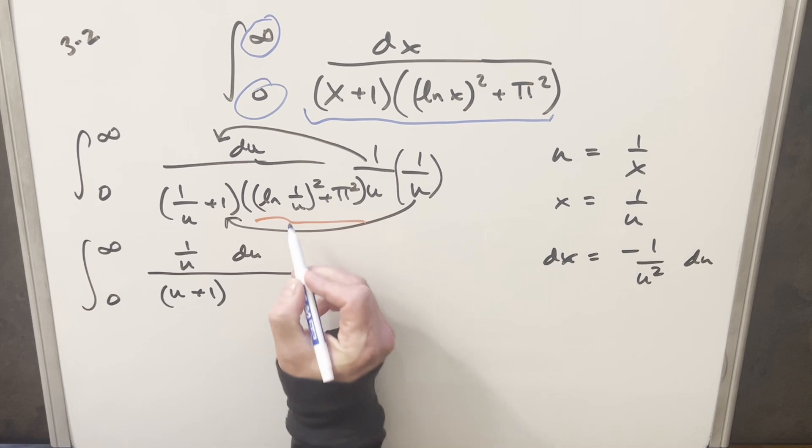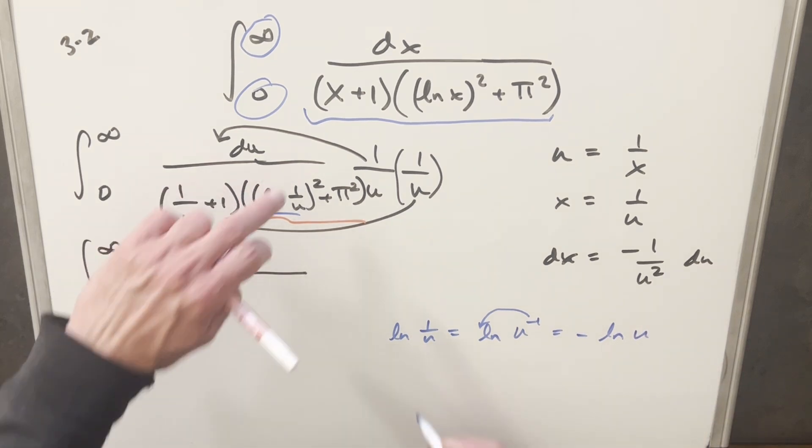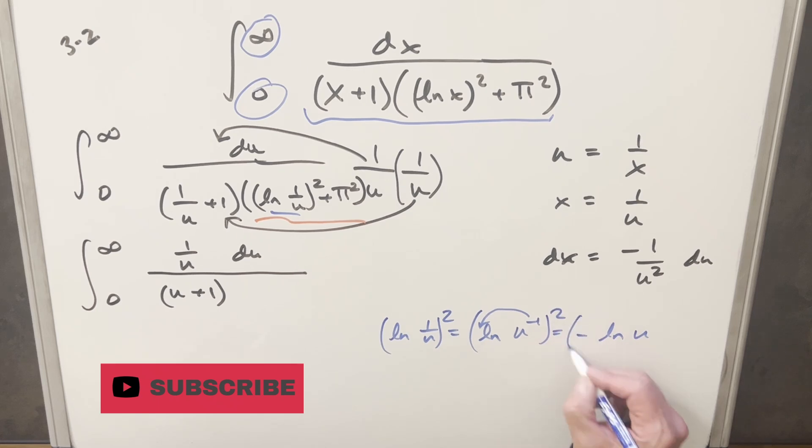For natural log 1 over u, I can write this as natural log of u to the minus 1. And then by exponent properties, bring the minus 1 up front. So now we have just minus ln u. But then this thing is squared, so let's just have everything squared. And then here, when we have this squared,